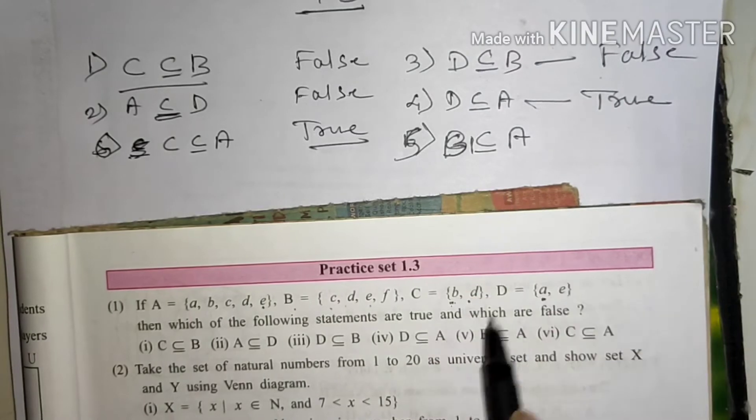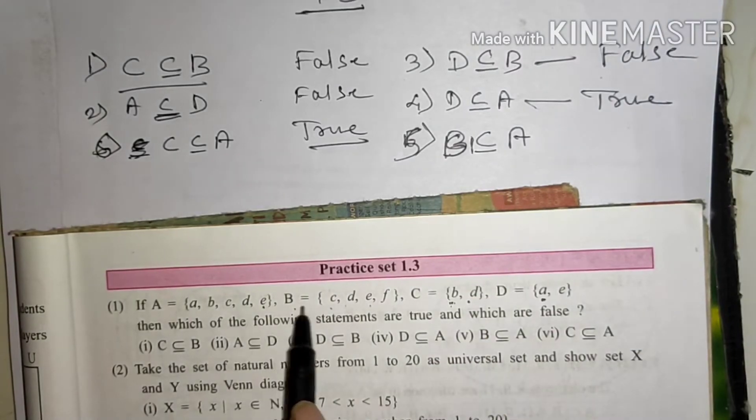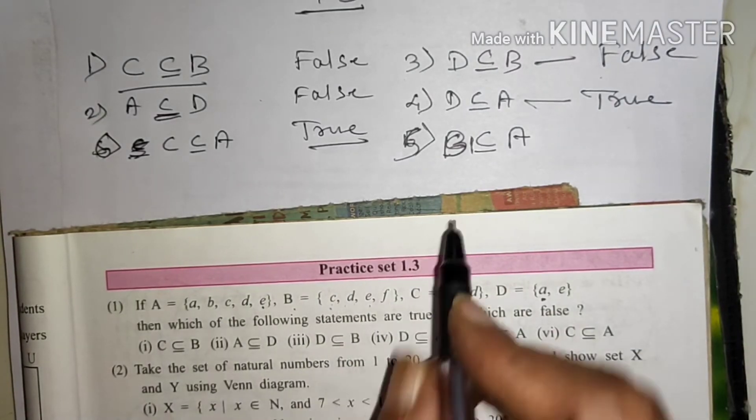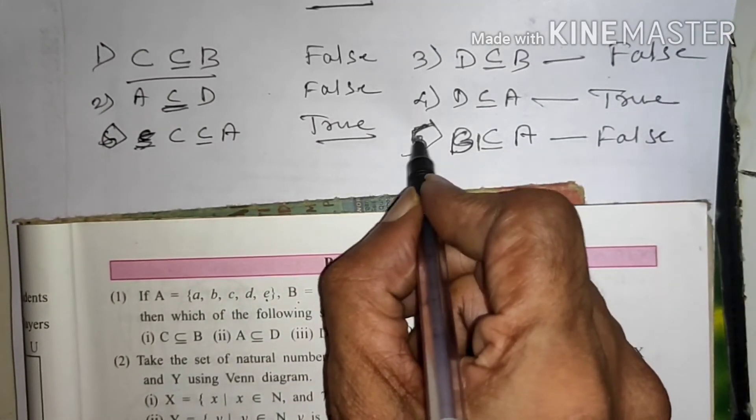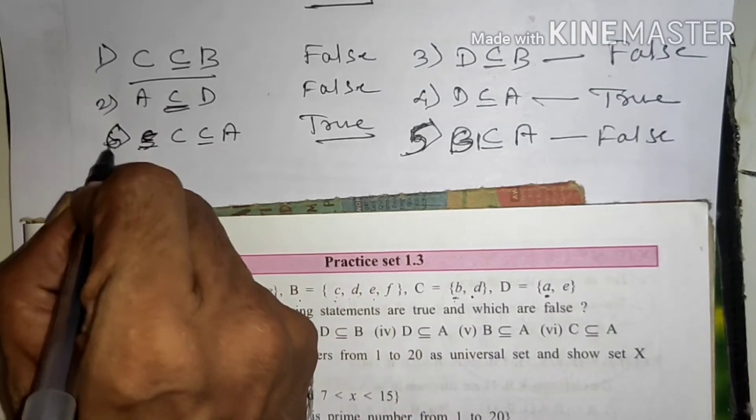B ke element C, D, E, F, ismein F nahi hai to yeh aayega false. Question number five is first ka yeh six hai, yeh dhyan mein rakho.